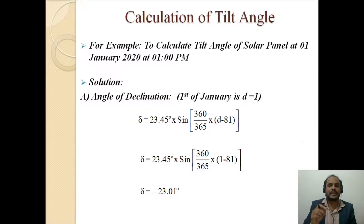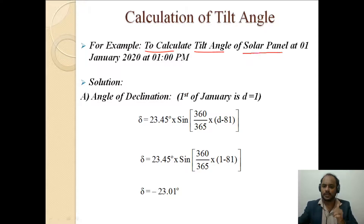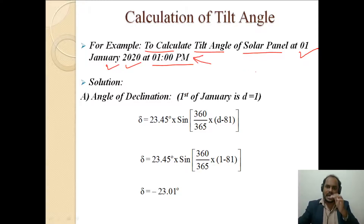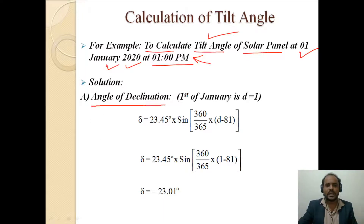Now we will see in detail how to calculate the tilt angle for a tracking type of mechanism. We take an example: calculate the tilt angle of a solar panel on January 1st, 2020 at 1 o'clock in the afternoon. We need to know the azimuth angle, the elevation angle, and the tilt angle for that specific day and time, and we can also calculate the variation of tilt angle hour by hour.